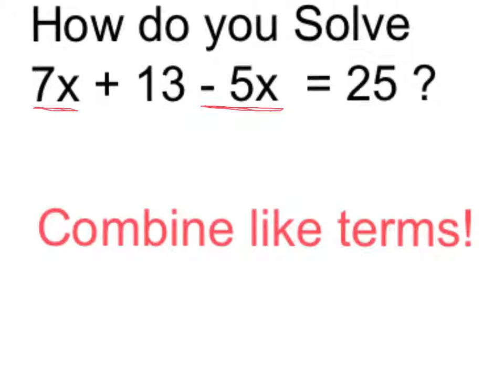So if we start with 7x and later we subtract 5x's, that's going to leave us with 7 minus 5, or 2x's all told. So I can simplify this as 2x plus 13 is equal to 25.